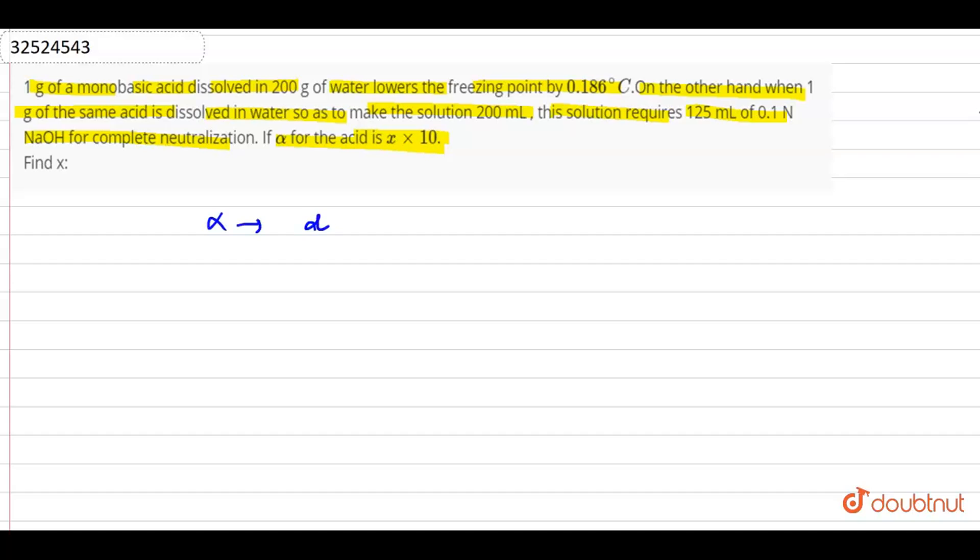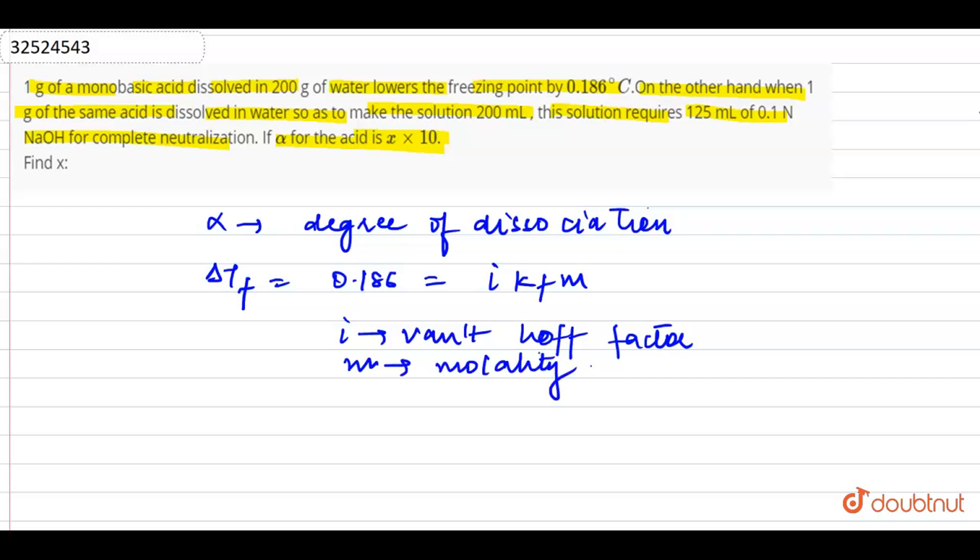So basically, we have to find the degree of dissociation in this question. In this question, what do we have? Delta Tf = i into kf into m, where i is the van't Hoff factor. M is the molality and kf for water is 1.86 degree Kelvin per molal.